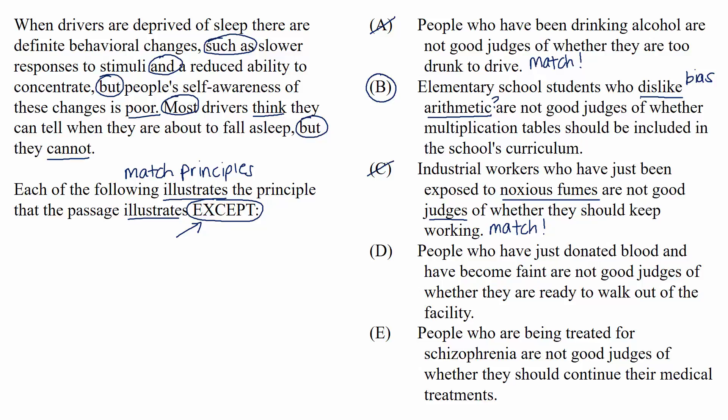Choice D: people who have just donated blood and have become faint are not good judges of whether they are ready to walk out of the facility. This choice also has a matching principle. The physical condition is being faint from donating blood, and that physical condition is stopping them from being able to make a good decision about whether they are ready to leave.